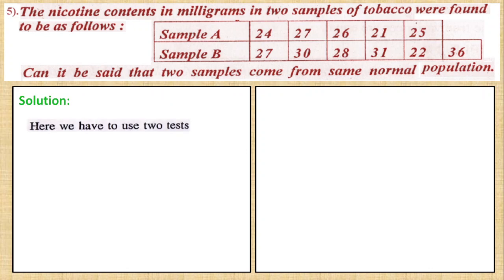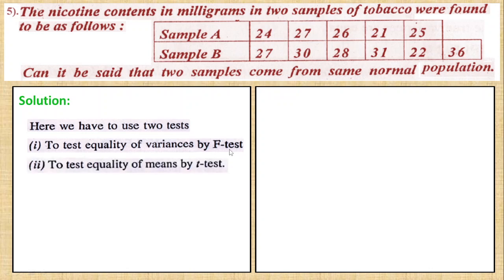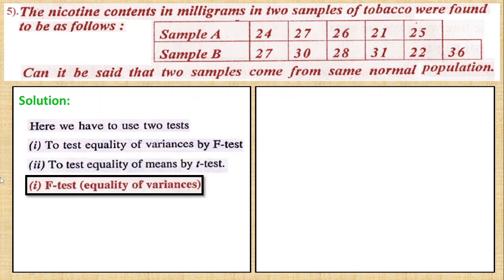First, here we have to use two tests. First one is F-test and the second one is T-test. So first we will see the F-test. If the F-test is accepted, then we will go to the T-test. Otherwise we stop at the F-test.